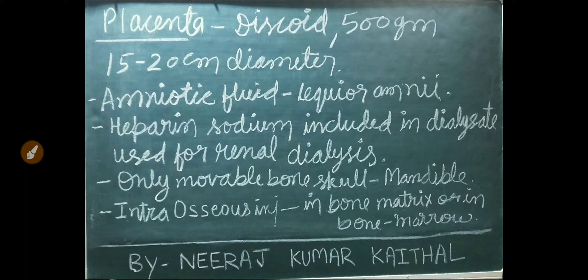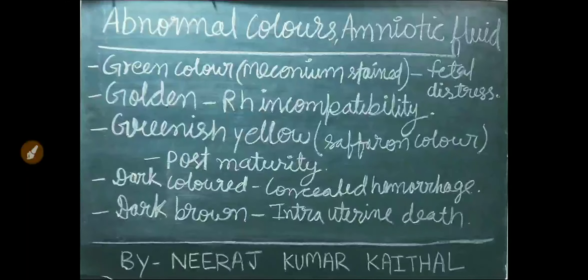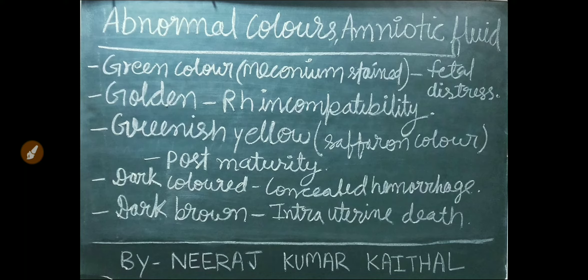Intraosseous injection is given in bone matrix or in bone marrow. Abnormal colors of amniotic fluid: green color with meconium stain shows fetal distress. If the amniotic fluid is golden color, it shows Rh incompatibility. If greenish-yellow or saffron color, it means post-maturity.